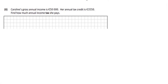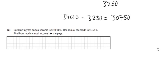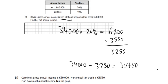Right, Caroline's gross income is 50,000. Her annual tax credit is 3,550. Find out her... Right, so we have to use this then up here again. So this time she earns 50,000. So on her first 40,000, she's going to pay it at 20%. But on the rest of it then up to the 50,000, she's going to pay the rest of it at 40%.